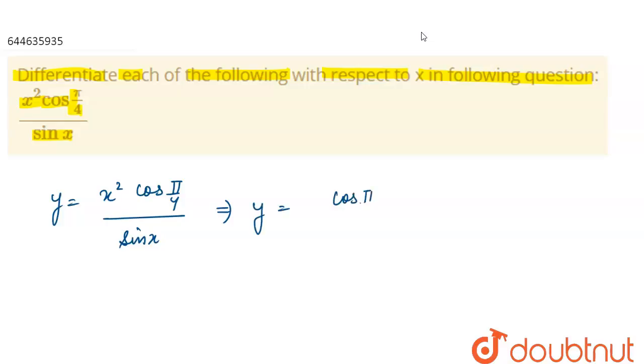cos(π/4), separating cos(π/4), and we can write this as x² upon sin(x). Now we can see that x² upon sin(x) is in division form.